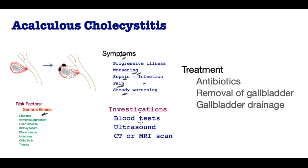Blood tests may give a clue that things are not well, with inflammatory markers suggesting underlying infection. However, it is ultrasound — and more particularly CT or MRI scan — that will definitively clinch the diagnosis. Patients are found to have no stones, but their gallbladders are inflamed and thickened, and may show impending or actual perforation of the gallbladder wall.